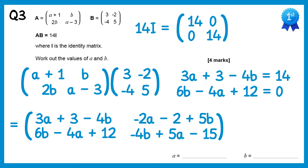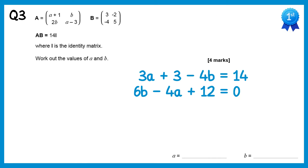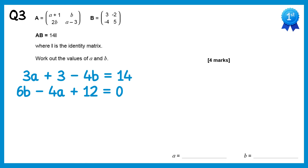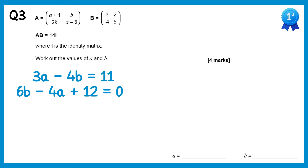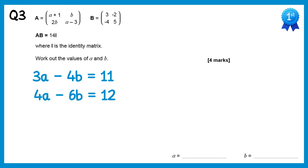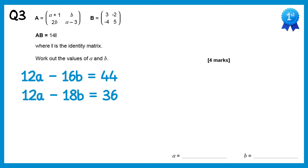These aren't in standard format yet, so we rearrange them. For the top equation, subtract 3 from both sides to get 3a take 4b equals 11. For the bottom equation, rearrange to get 4a take 6b equals 12. To solve: multiply the first equation by 4 to get 12a take 16b equals 44, and multiply the second by 3 to get 12a take 18b equals 36.